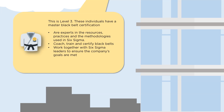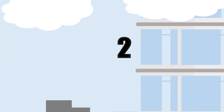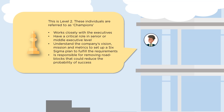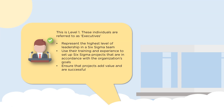Level 3 are individuals with a master black belt certification — experts in the resources, practices, and methodologies employed in Six Sigma. Their main emphasis is to coach, train, and certify black belts, and they work with other Six Sigma leaders to ensure company goals are met. Level 2 are called Champions — they work closely with executives, usually in a senior or middle executive role. They have a clear understanding of the company's vision, mission, and metrics, and are responsible for removing roadblocks that could hamper a project's success. Level 1 — the Executives — represent the highest level in a Six Sigma team. With training and experience, they set up Six Sigma projects aligned with company goals and ensure each project adds value to the organization and is ultimately successful.